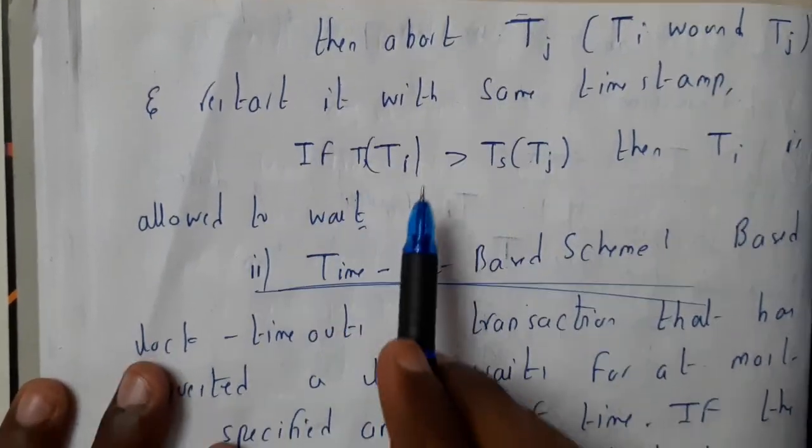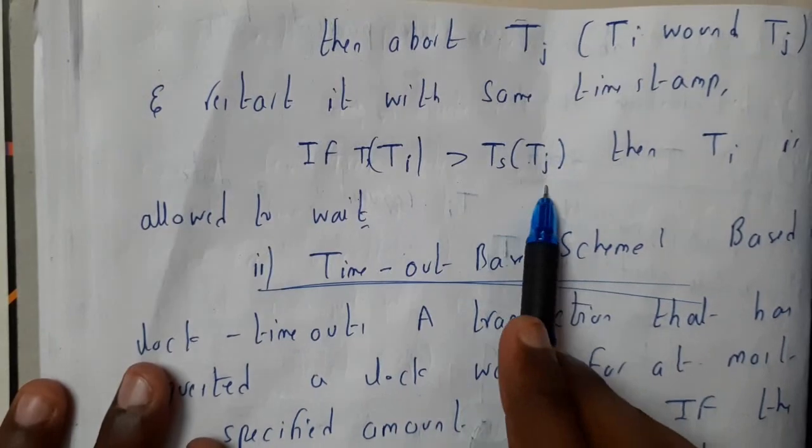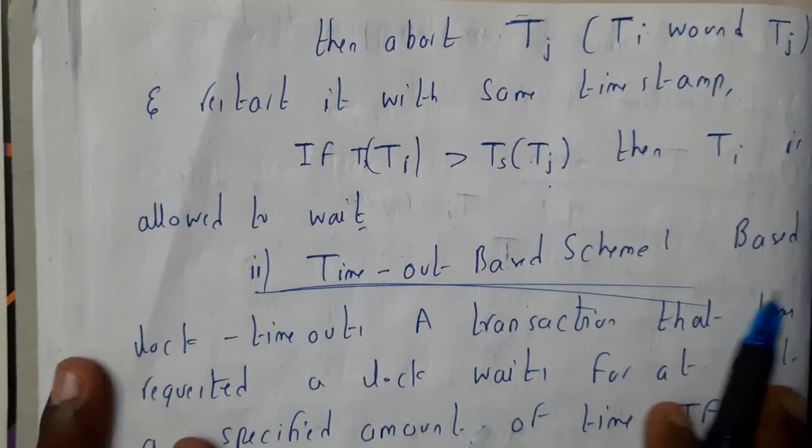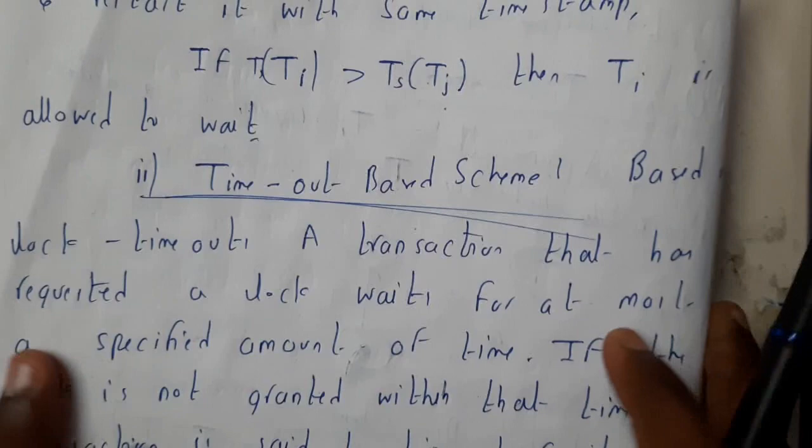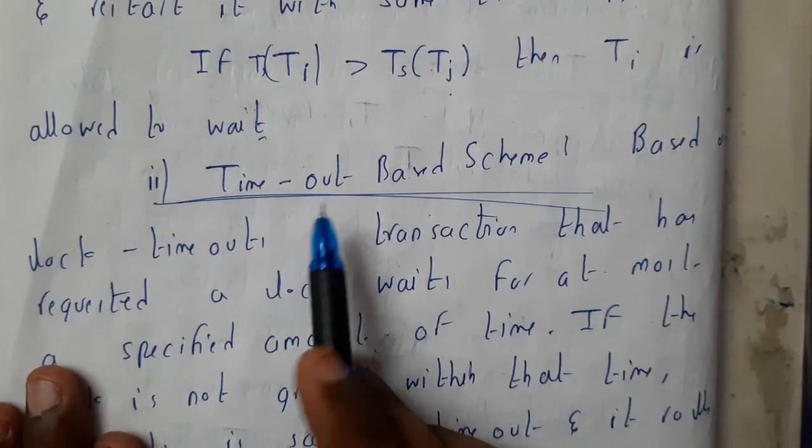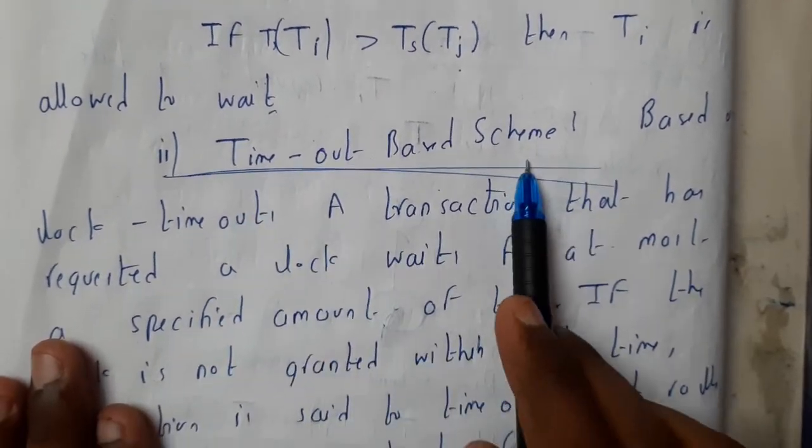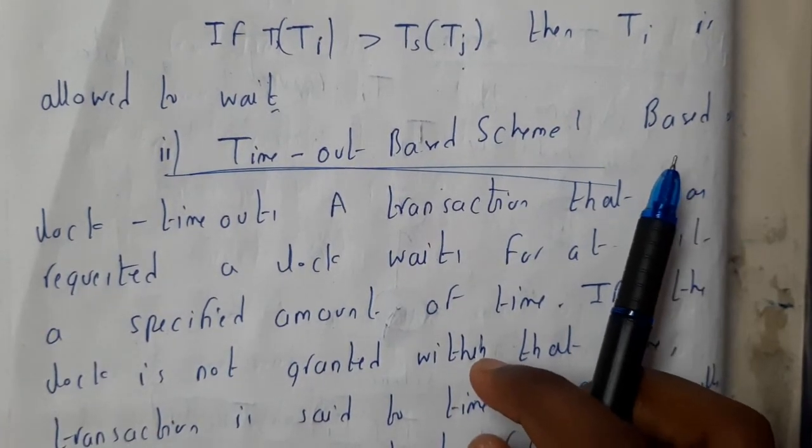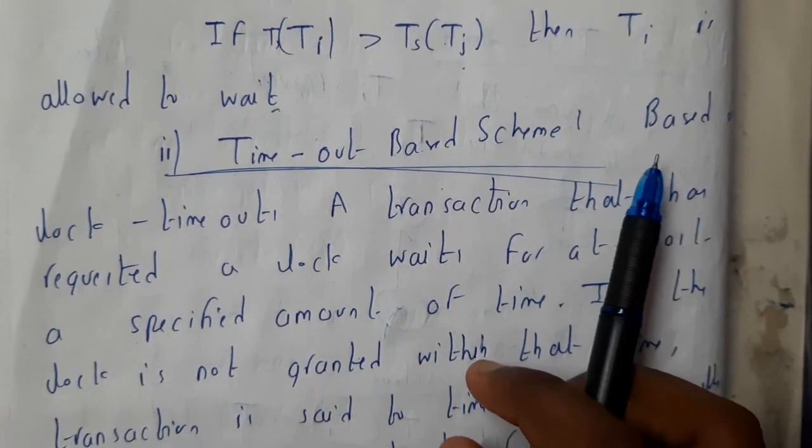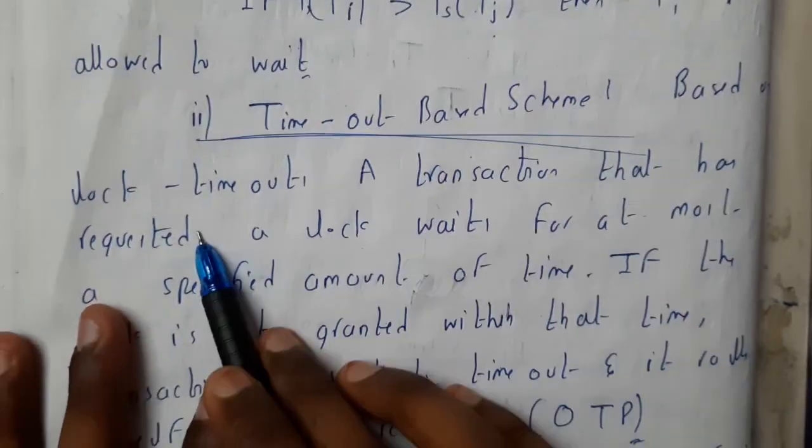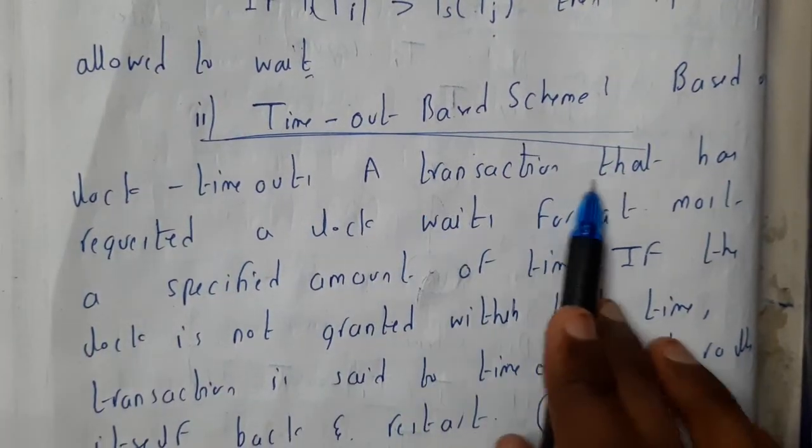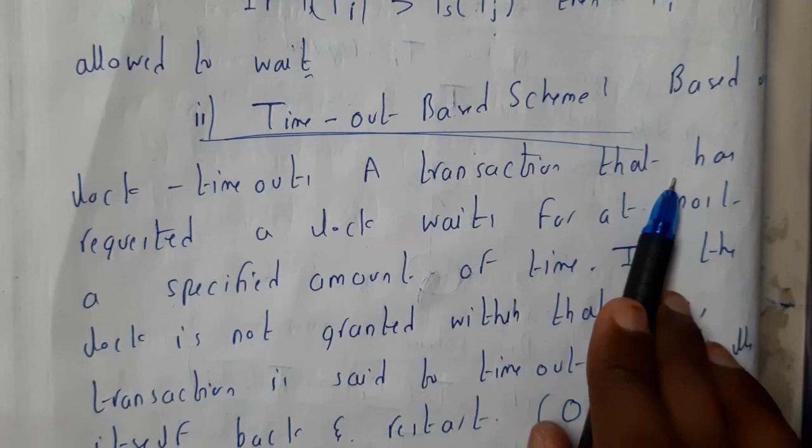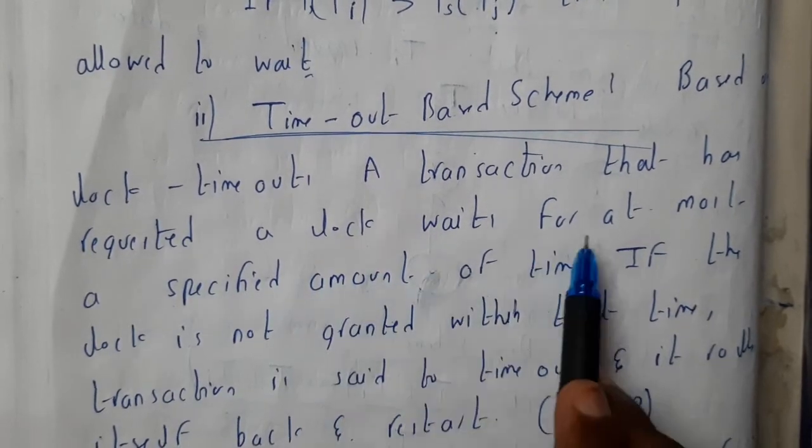If timestamp of Ti is greater than timestamp of Tj, we will be allowing it. The second method is timeout-based scheme. In this, you will be fixing a particular time slot in which it should be done, or else you will release everything.